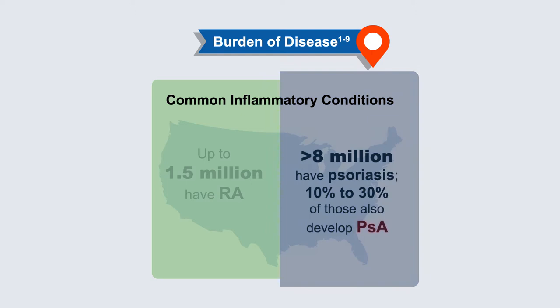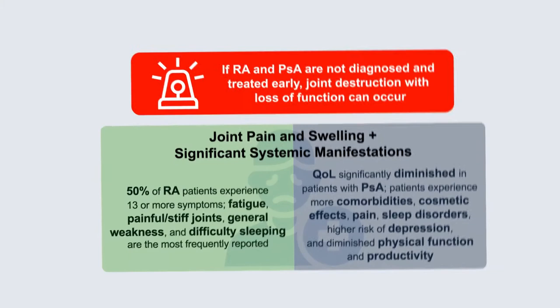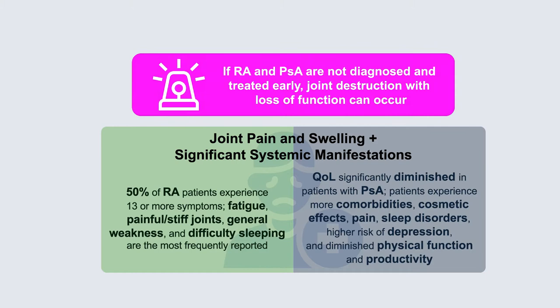Psoriatic arthritis is even more prevalent if we do the math. There are about 8 million Americans with psoriasis, and somewhere between 1 in 10 and 3 in 10 have elements of psoriatic arthritis, but it's under-recognized. Both of these conditions, if not diagnosed and treated early, can lead to progressive joint destruction with loss of function and a variety of extra-articular manifestations.